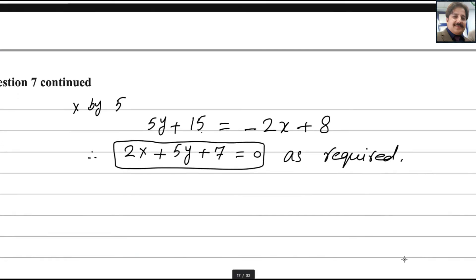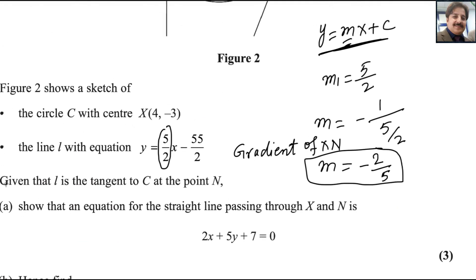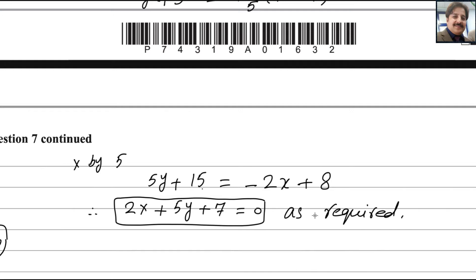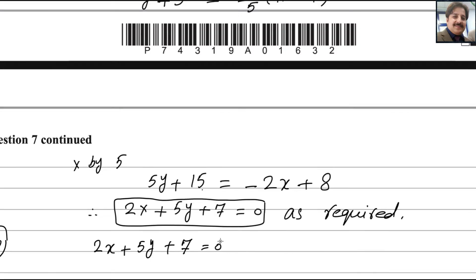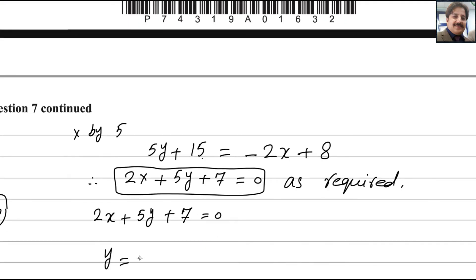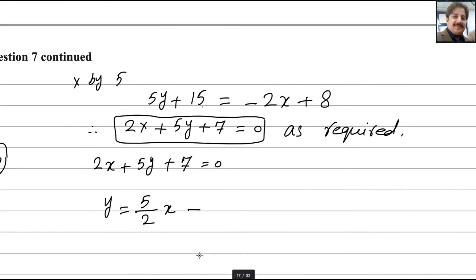For part B, we need to find the coordinates of N. We have two equations: the equation of line XN, which is 2x plus 5y plus 7 equals zero, and the equation of line L, which is y equals 5 over 2 x minus 55 over 2. We will solve these two equations simultaneously — their point of intersection will be point N.